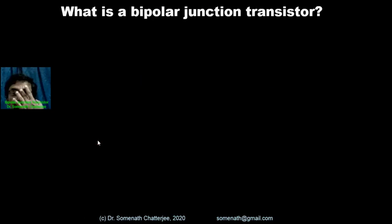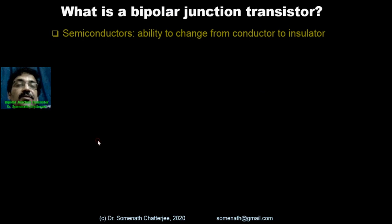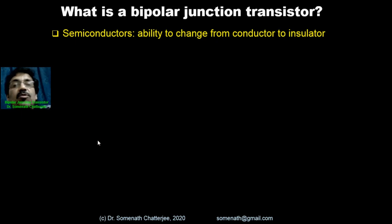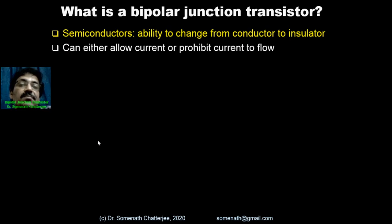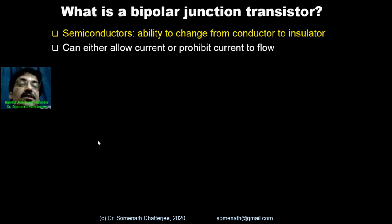What is a bipolar junction transistor? To start with this topic, we have to discuss semiconductors. A semiconductor has the ability to change from conductor to insulator — it can allow the current or prohibit the current to flow.